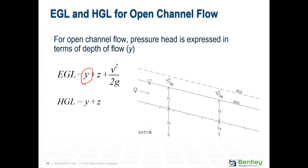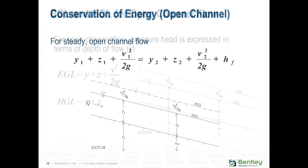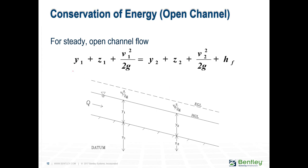The energy grade line is the depth of flow plus the elevation of that point plus the velocity head — the velocity head component did not change. The hydraulic grade line is simply the depth of flow plus the elevation of that point. For conservation of energy, the energy in one has to equal the energy in two, and there also have to be some friction head losses to account for the energy loss between one and two.